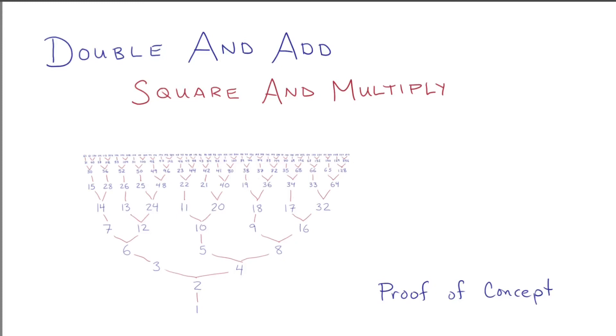Double and add, square and multiply. Here's the puzzle. Given an integer, come up with a way to gradually build that number up from zero using only two possible operations: adding one or doubling.